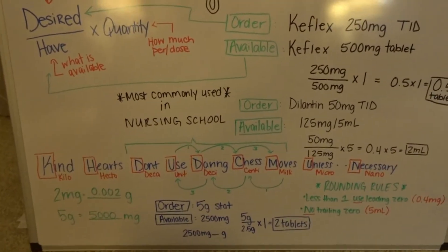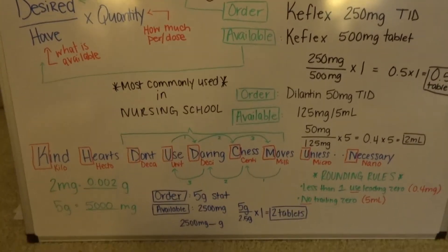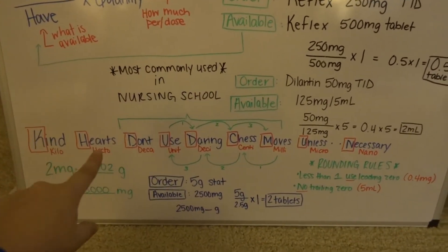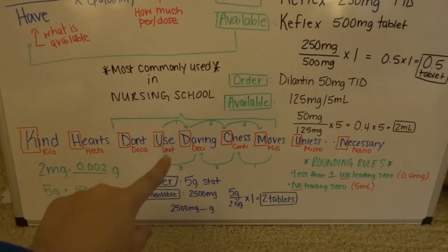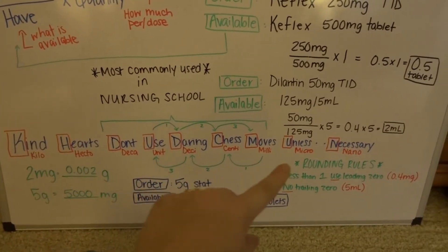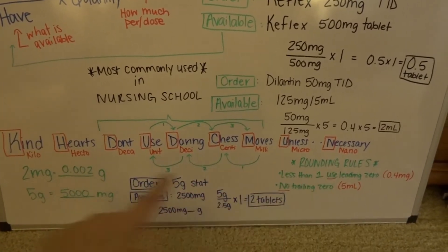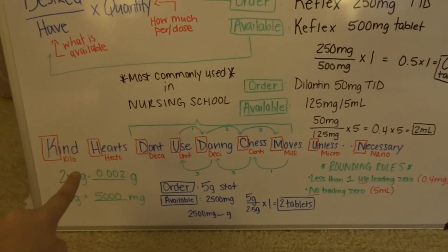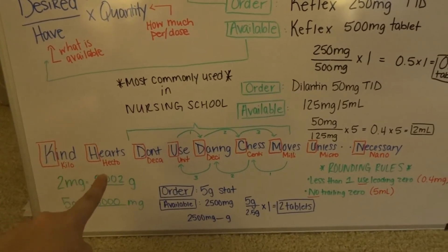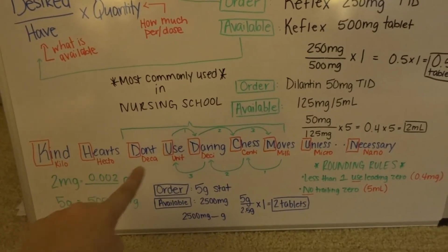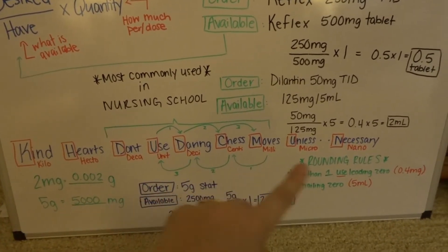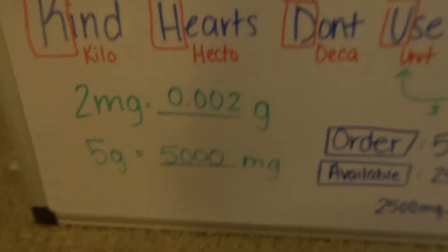I use this acronym at the bottom here: 'Kind hearts don't use daring chess moves unless necessary.' Kind stands for kilo, hearts for hecto, deca, unit, deci, centi, milli, micro, nano.